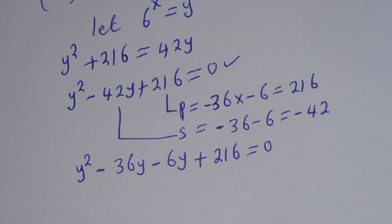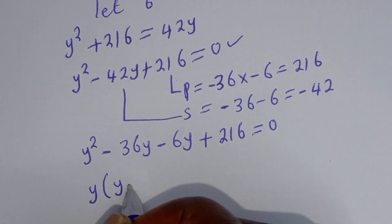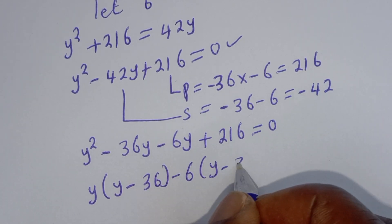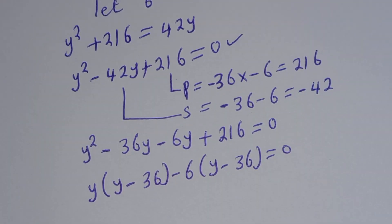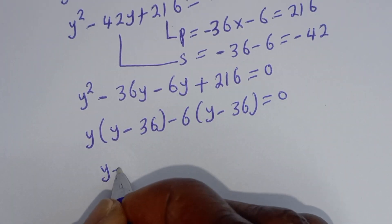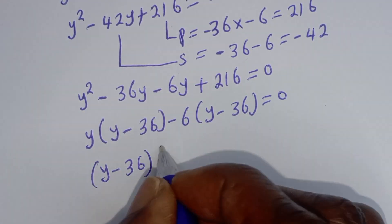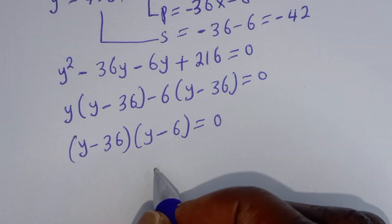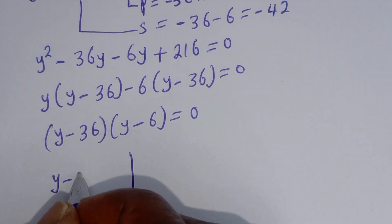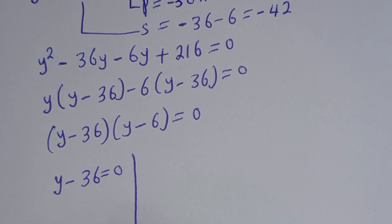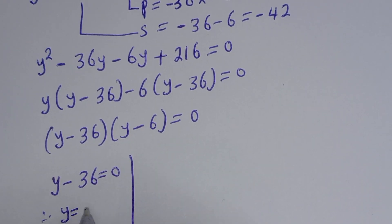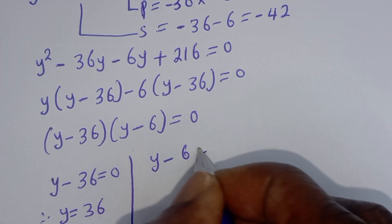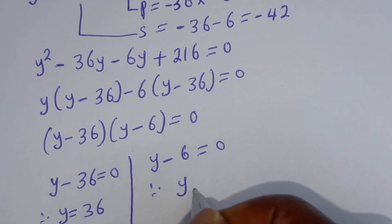Substituting: y squared minus 36y minus 6y plus 216 is equal to 0. Then y is common: y bracket (y minus 36) minus 6 bracket (y minus 36) is equal to 0. So (y minus 36)(y minus 6) is equal to 0. First case: y minus 36 equals 0, therefore y equals 36. Second case: y minus 6 equals 0, therefore y equals 6.